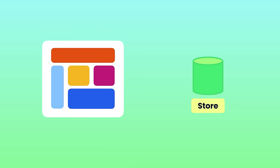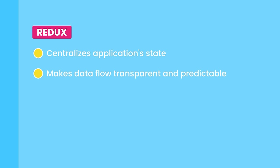If we need to update the data, there is a single place we have to update, which immediately solves the problem of synchronizing data across different parts of the UI. Redux's architecture also makes it easy to understand how data changes in our applications. If something goes wrong, we can see exactly how the data changed, why, when, and where it came from. In a nutshell, Redux centralizes our application state and makes data flow transparent and predictable.